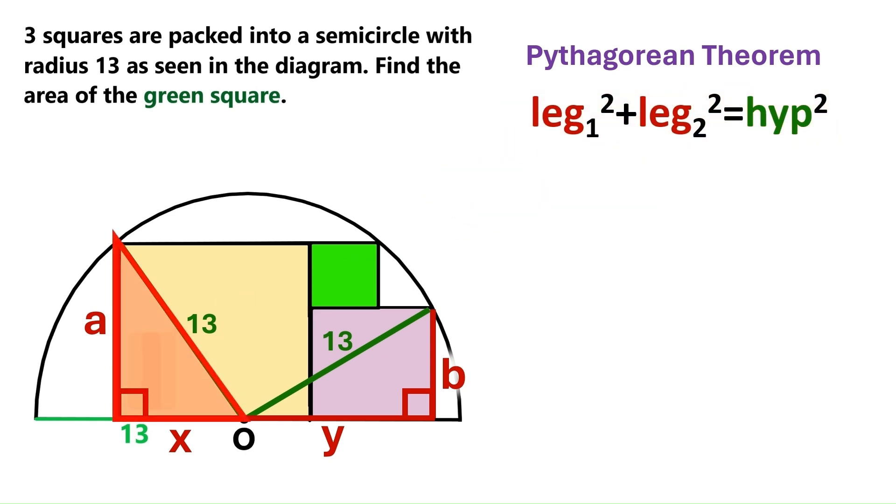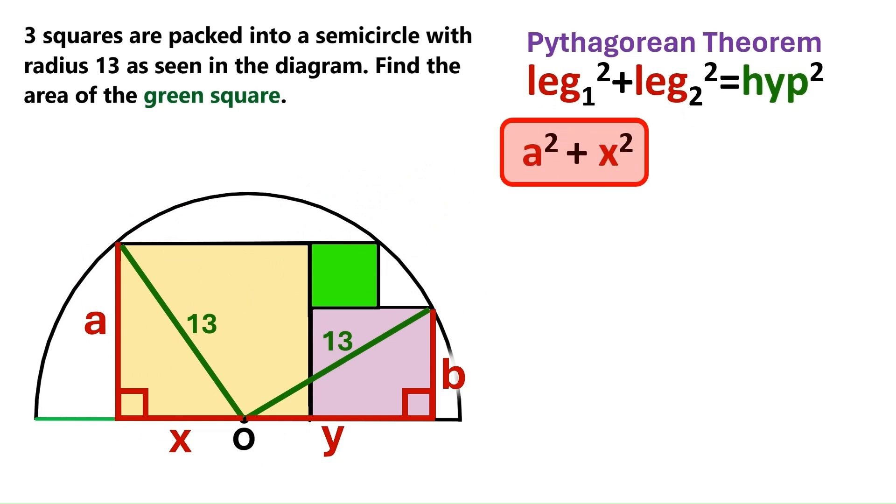Let's first look at this triangle on the left. Its legs are a and x, so let's take squares of those. And its hypotenuse is 13, so let's take the square of 13. And this will be our first equation.